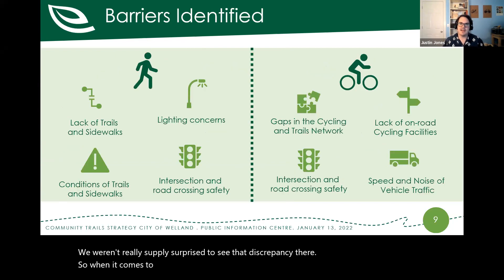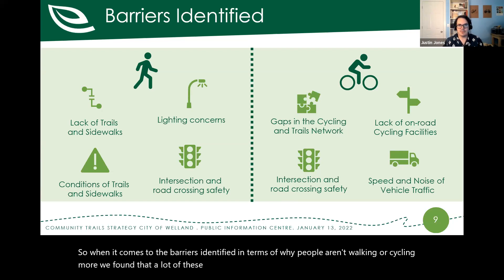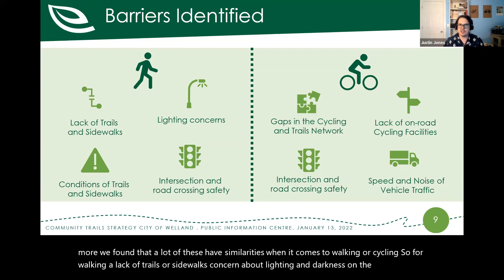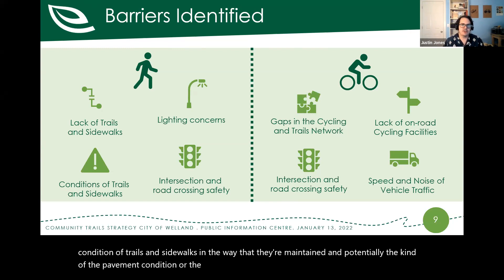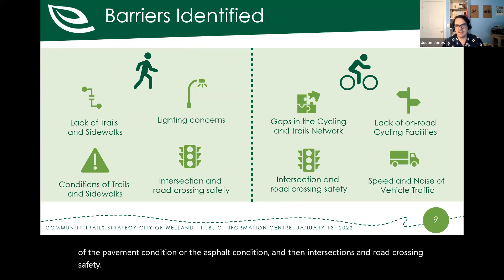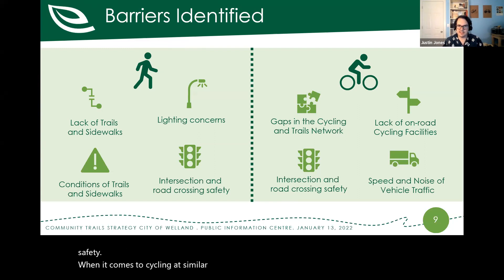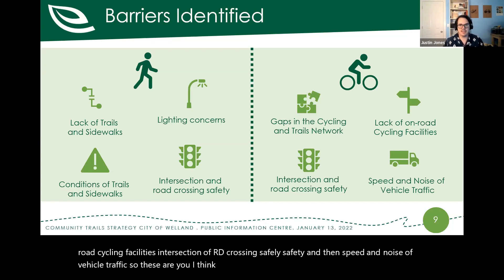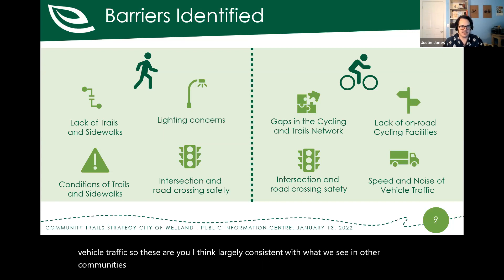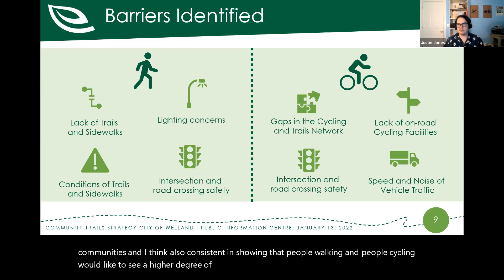When it comes to barriers to walking or cycling more, we found similarities for both modes. For walking: lack of trails or sidewalks, concern about lighting and darkness, trail and sidewalk condition, and intersection and road crossing safety. For cycling: gaps in the cycling and trails network, lack of on-road cycling facilities, intersection and road crossing safety, and speed and noise of vehicle traffic. These are largely consistent with other communities and show that both walkers and cyclists want a higher degree of connectivity in their active transportation network.